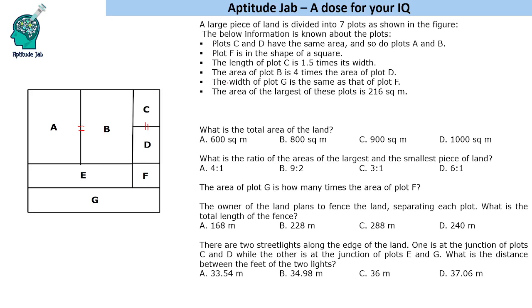Plot F is in the shape of a square. The length of plot C is 1.5 times its width. The area of plot B is 4 times the area of plot D and the width of plot G is the same as that of plot F. The area of the largest of these plots is 216 square meter. Basically, we will have to find the areas of all these plots and then answer these questions.